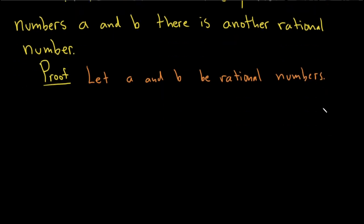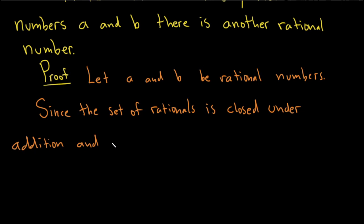Since the rational numbers are closed under addition and we're allowed to divide as long as the denominator is not zero, we have the following. The set of rationals is closed under addition and division by non-zero rationals.